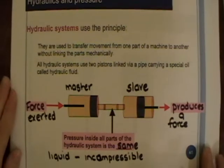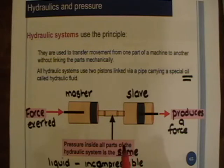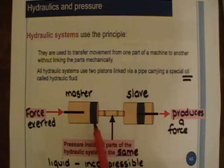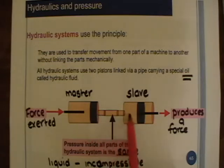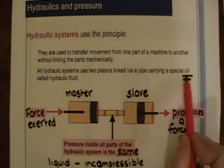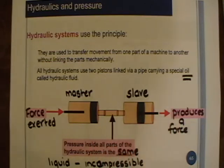It's very important that the liquid in the system is oil and not water. There are two reasons for this. First, if it were water and the piston got hot, the water could boil and evaporate, causing a loss of pressure. Or if it got too cold, the water could freeze and the system wouldn't work. Second, water inside a metal system can cause rusting, so oil is used to prevent that.